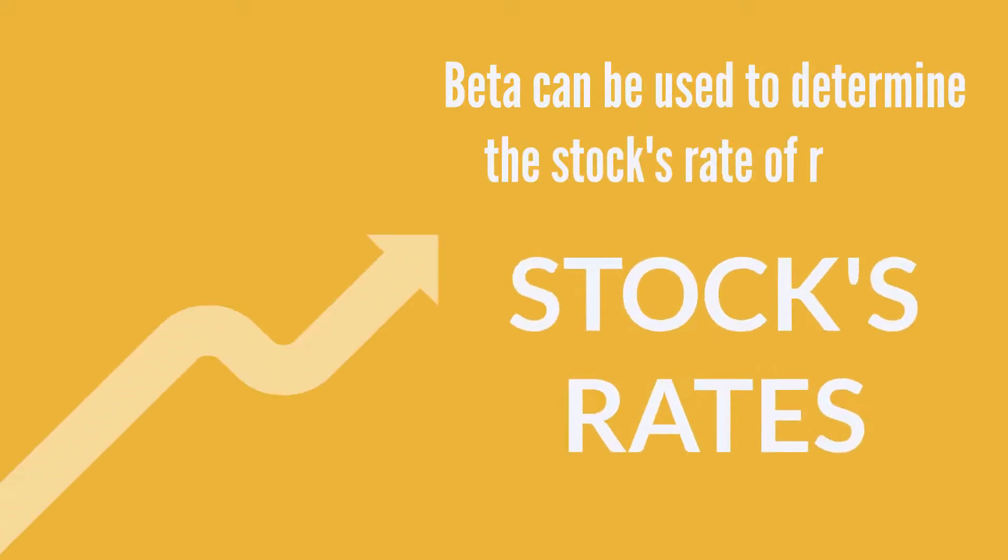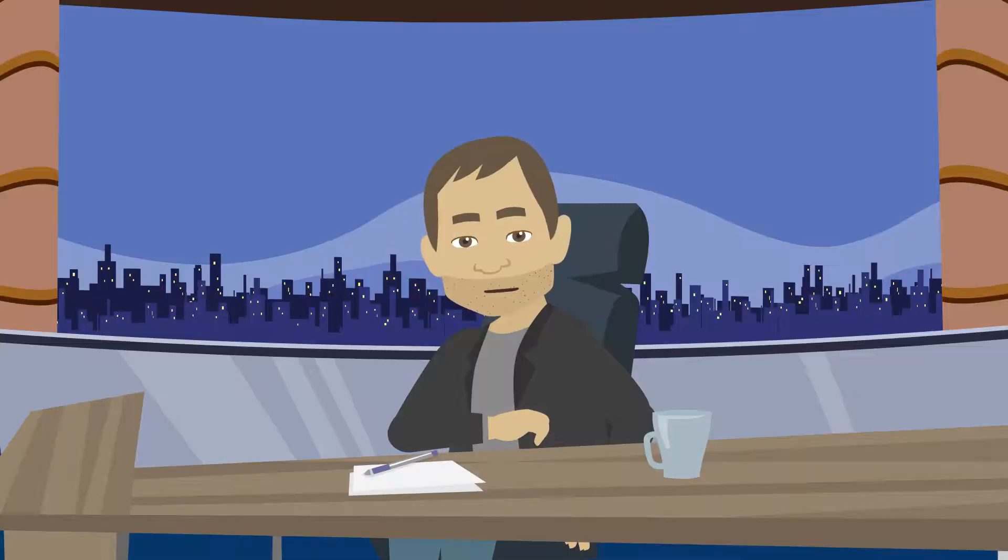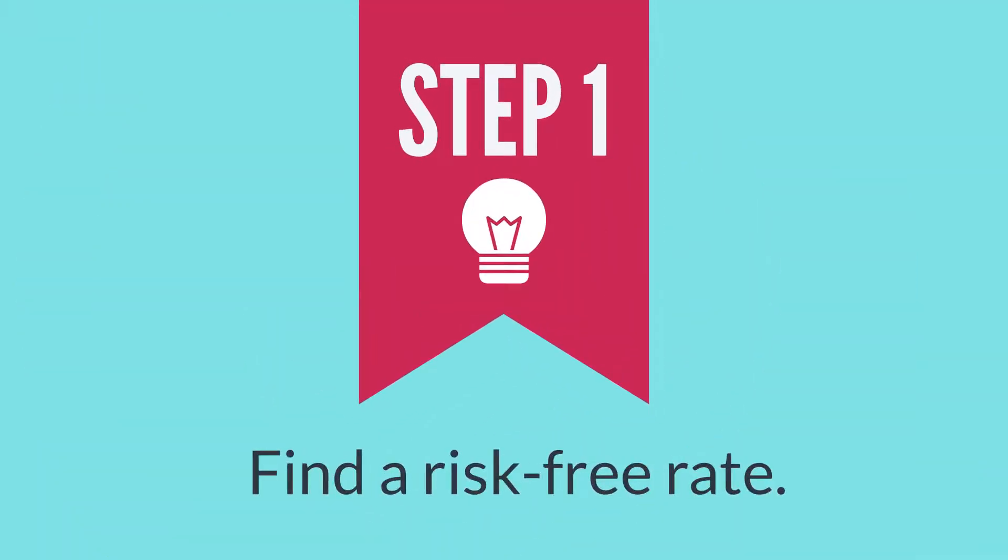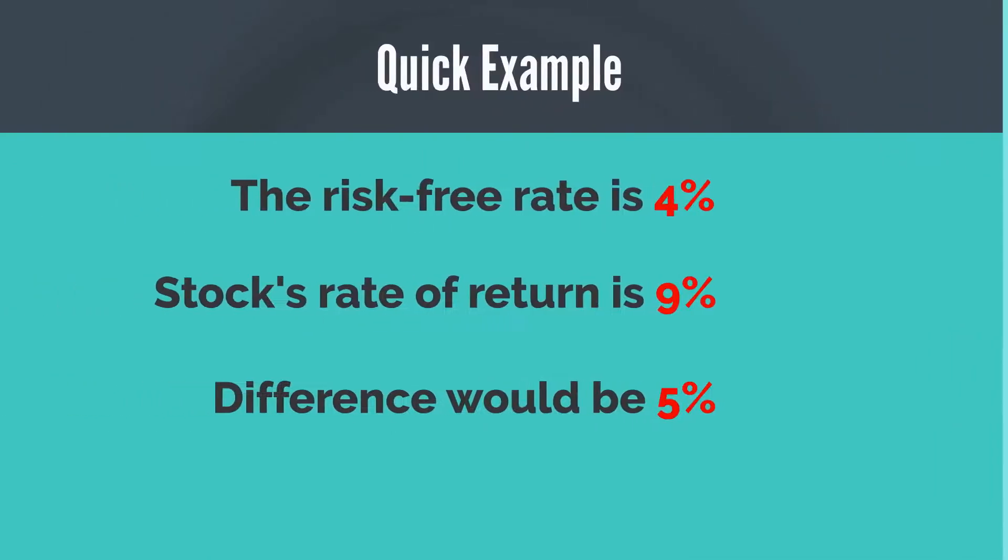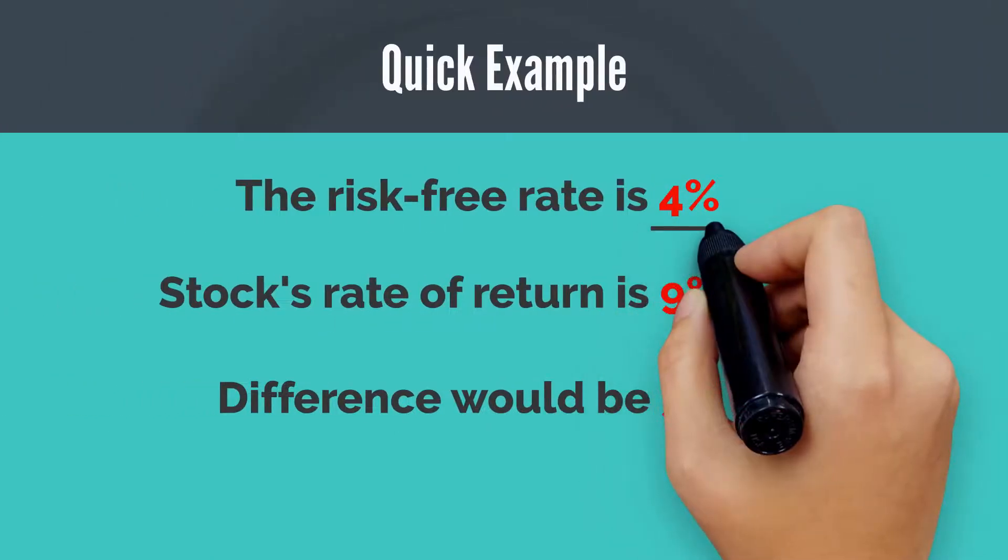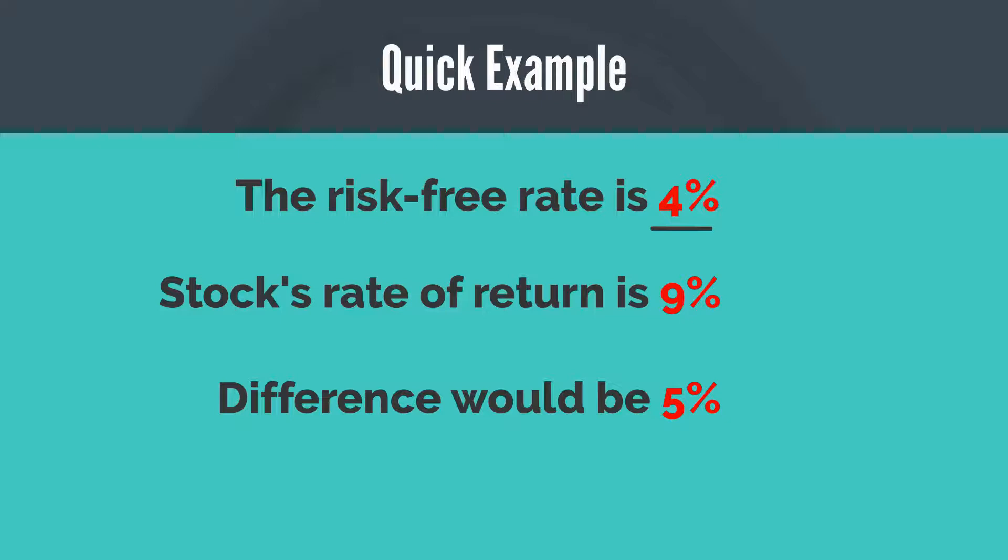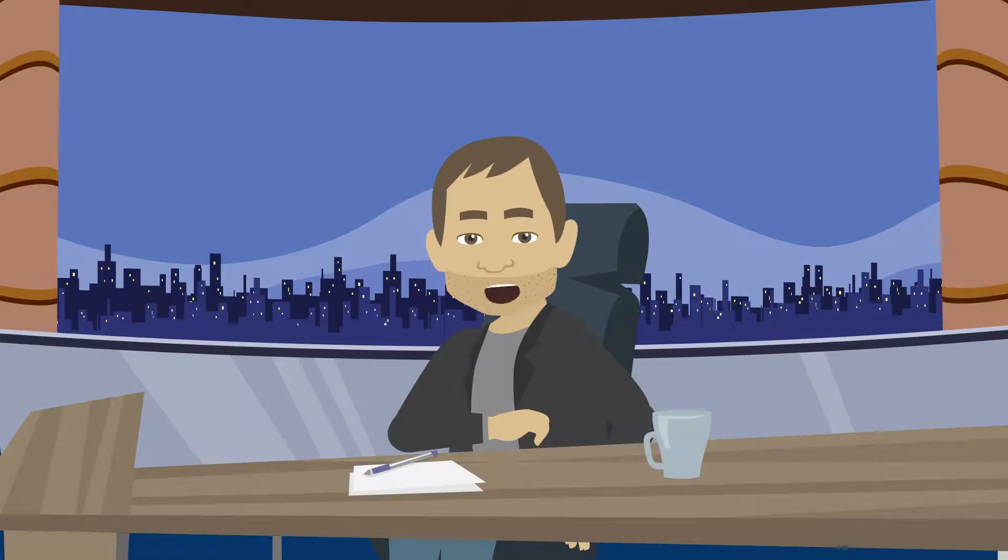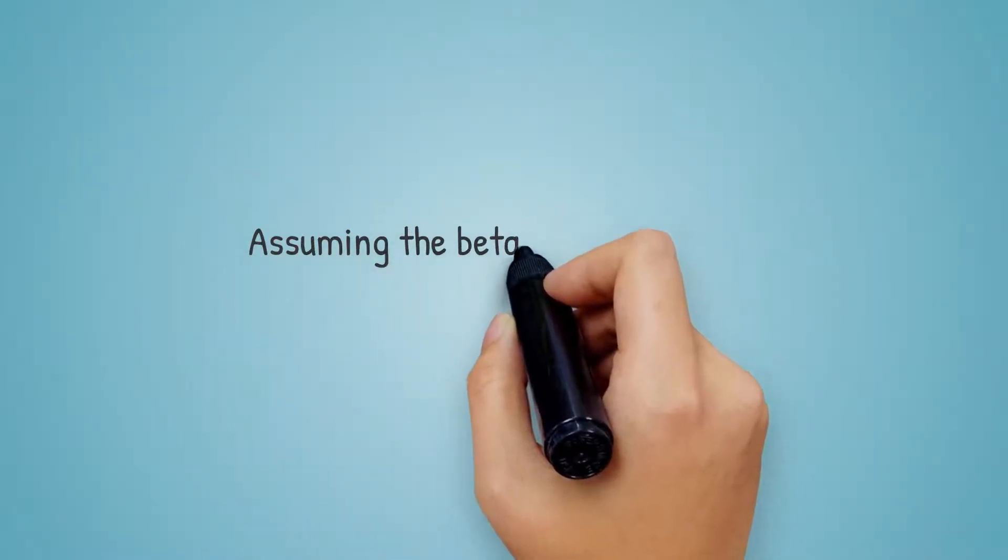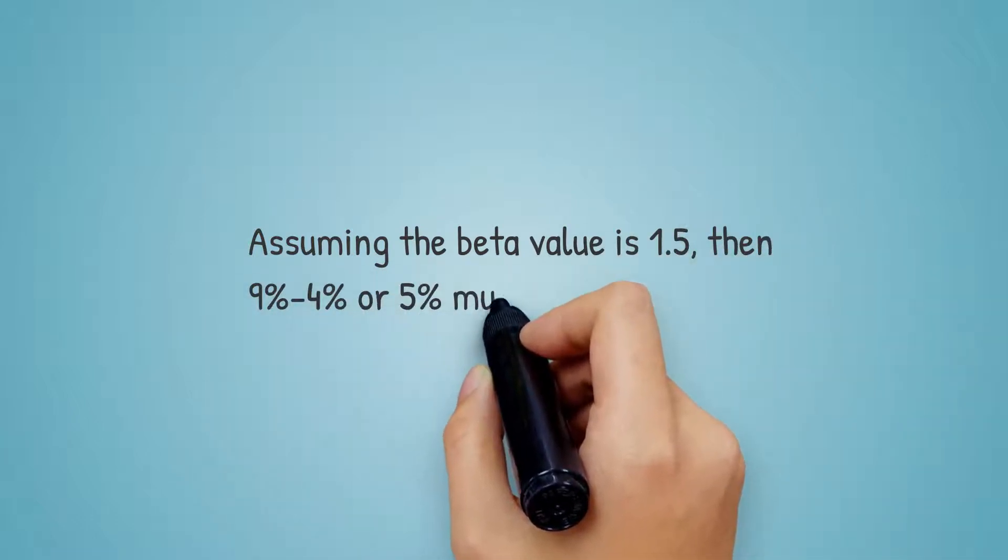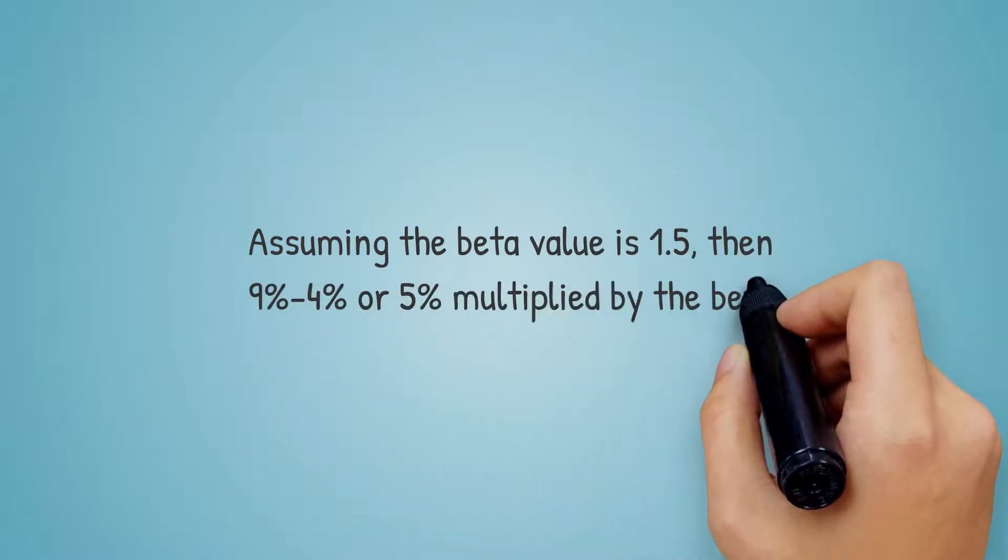Beta can be used to determine the stock's rate of return. It will be very easy for you if you keenly follow the steps I'm about to share with you. The first step is you should find a risk-free rate. That is the same value as discussed previously. We will use 4% as an example. The next step is to determine the rate of return for the market or its representative index. We will use the same 9% as the example here. The next thing is you should multiply the beta value by the difference between the market rate of return and the risk-free rate. Assuming the beta value is 1.5%, then 9% minus 4% or 5% multiplied by the beta value.